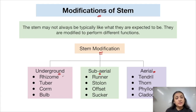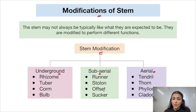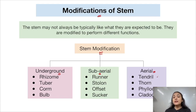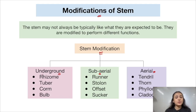Underground stem modifications include rhizome, tuber, corm, and bulb. Sub-aerial stem modifications include runners, stolon, offset, and suckers. Aerial stem modifications include tendrils, thorns, phylloclades, and cladodes. We will study about each of these categories and their subtypes one by one.